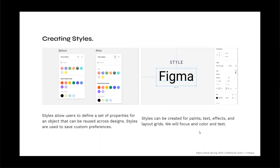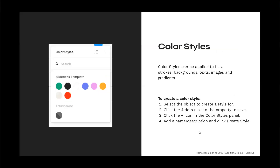Creating styles in Figma: styles allow users to define a set of properties for an object that can be used across designs. They can be created for paints, text, effects, and layout grids. We will focus primarily on color and text in this class. Color styles can be applied to fills, strokes, backgrounds, text, images, and gradients.